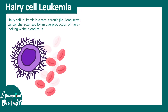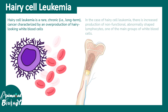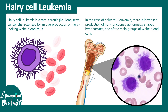Hairy cell leukemia is a rare chronic cancer characterized by an overproduction of hairy-looking white blood cells. Basically, there is an increased production of non-functional, abnormally shaped lymphocytes. Specifically, the B cells are affected, and in a peripheral blood smear or bone marrow smear one can appreciate the weird hairy appearance of these B cells — that is the characteristic of this particular leukemia.